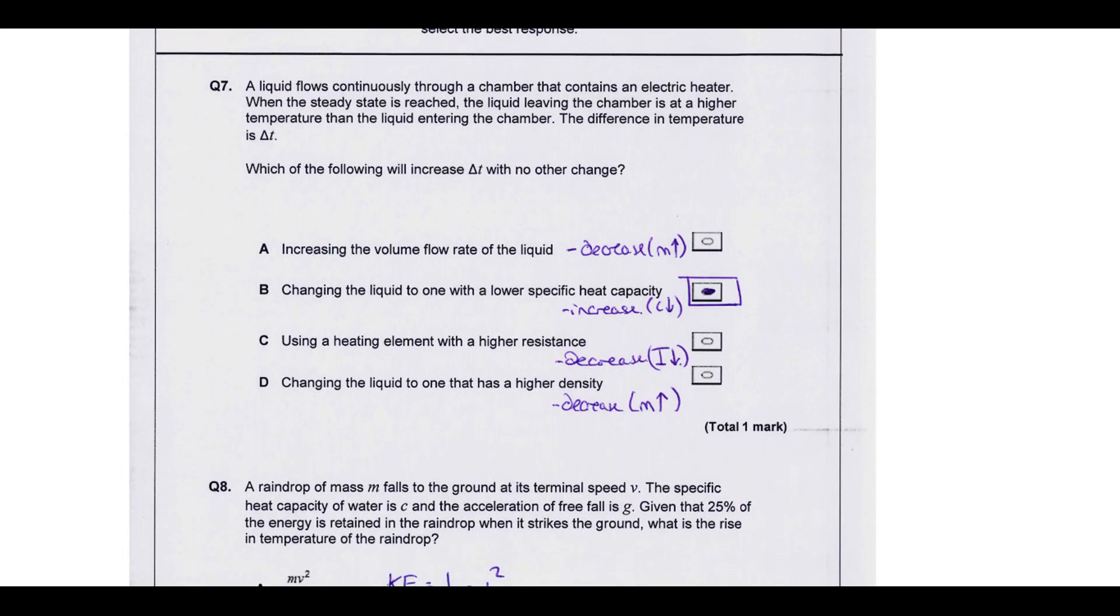Let's just check the others though. Using a heat element with a higher resistance - higher resistance would decrease the current, which decreases the power, so that gives you a smaller temperature change. And if we had a higher density, that would mean there was more mass flowing through per second. So again, same as logic for question one, more mass would mean a smaller temperature change.